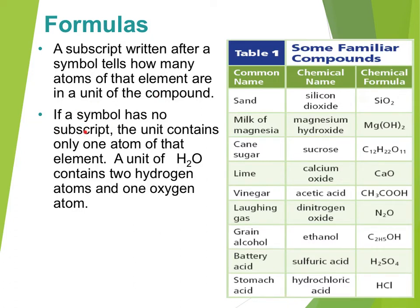If a symbol has no subscript, we assume there is one atom of that element. So going back to H2O, there's a little 2 for the H, so that means there's two hydrogen, and there's nothing for the O, so there's one oxygen.